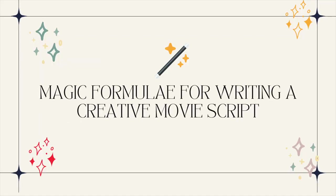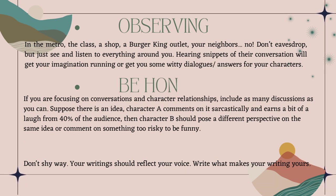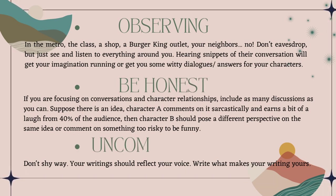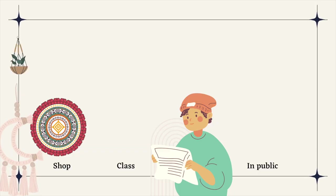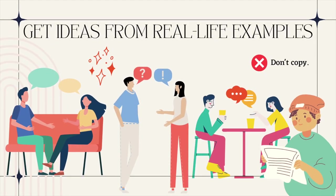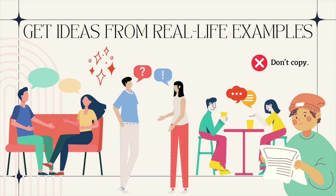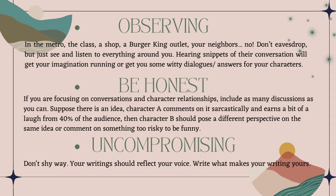Now we discuss the magic formula for writing a creative manuscript: be brave, honest, and uncompromising — the three pillars that will help you construct the best foundation for writing a movie. Observing: in a metro, a class, a shop, a Burger King outlet, among your neighbors — just see and hear everything around you. Observe people talking to each other or on a phone call; hearing snippets of their conversation will get your imagination running or give you witty dialogues for your characters.